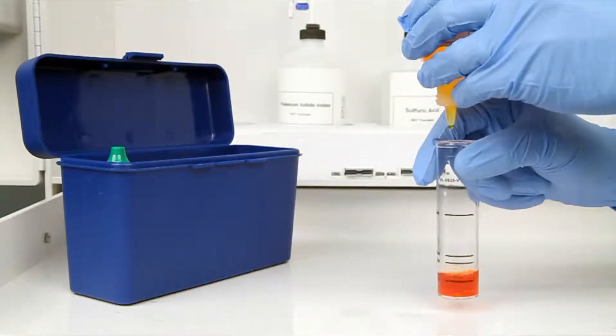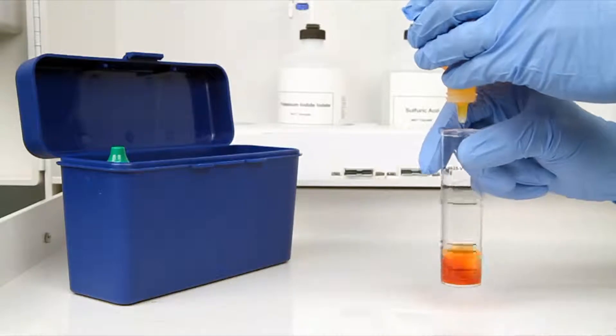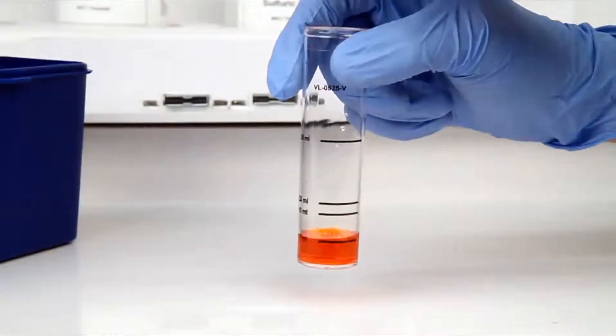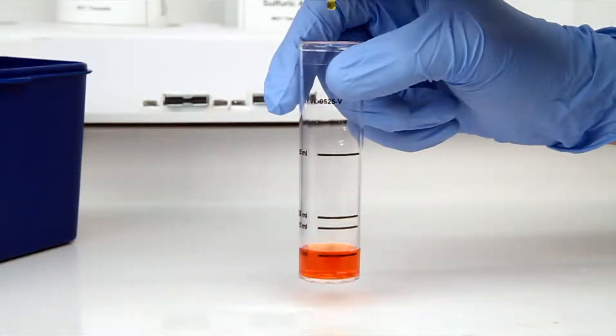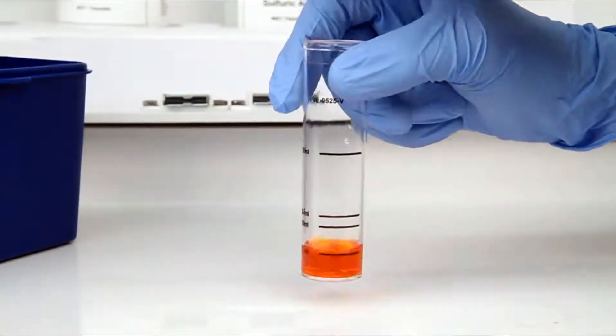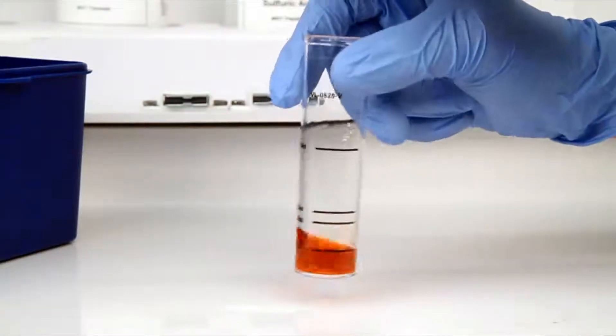The bottle of titrant contains a dropper tip, therefore it's important to hold the bottle vertically to make sure you get a consistent drop size. After the addition of each drop of titrant, you want to swirl the vial to make sure the sample is properly mixed.